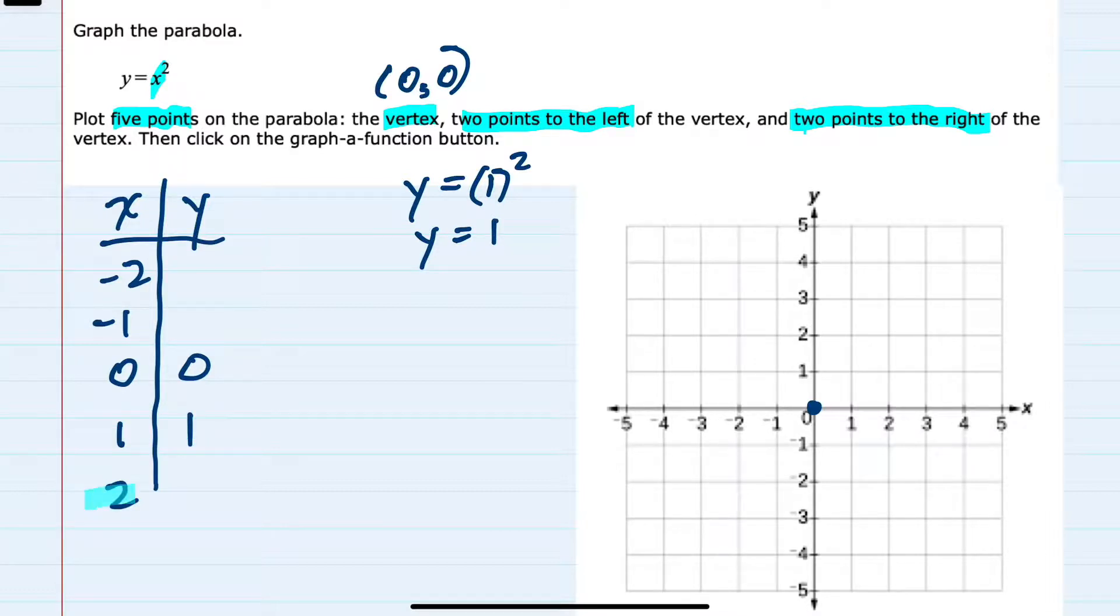If I move down to x equals 2 and substitute that in, I would have y equals 2 squared, which is y equals 4. So we found two points on the right. We have the point (1, 1) here and the point (2, 4) which is here. And then for the left,